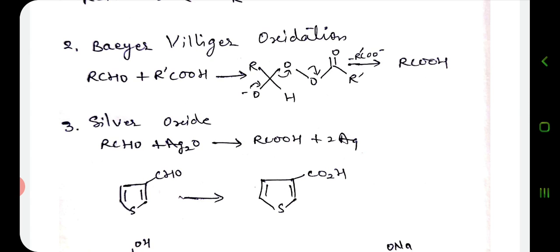In the Baeyer-Villiger oxidation, aldehydes also form an intermediate with the peroxy acid, similar to that of a ketone, which looks like a ketone intermediate. It then rearranges and gives us an acid. In this way, by using different oxidizing reagents with aldehydes, we obtain acids.